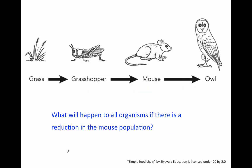So this very first one: what will happen to all organisms if there is a reduction in the mouse population? We're talking about all different organisms if there's a reduction in the mouse population. If I'm looking at my vocab sheet, I know that reduction means to decrease. So if the mouse population is going down, what will happen to all other organisms? Please push pause at this time.